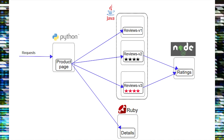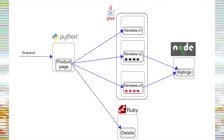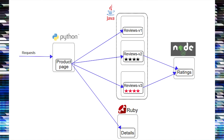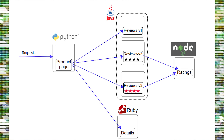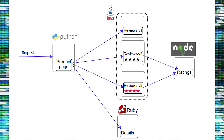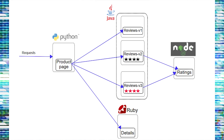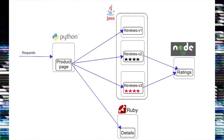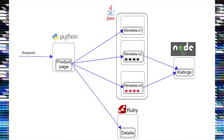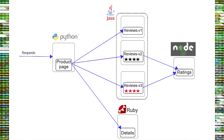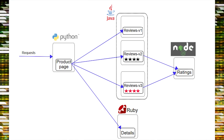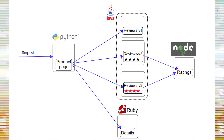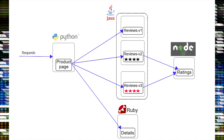Let's get started with our demo. In today's session, we'll be deploying the BookInfo application. The BookInfo application is broken into four separate microservices: product page, details, reviews, and ratings. The product page microservice calls the details and reviews microservices to populate the page.